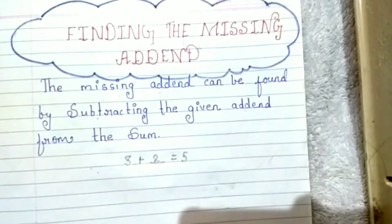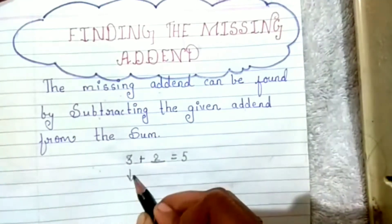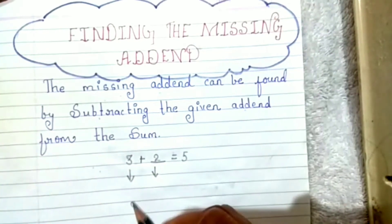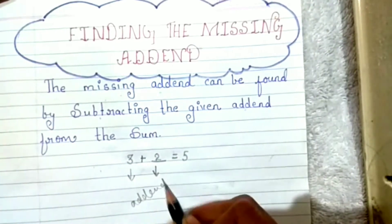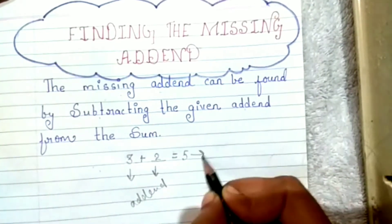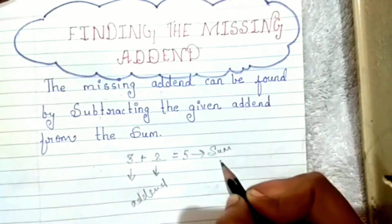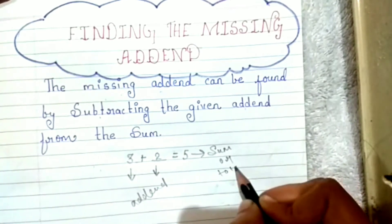सबसे पहले हम यह समझेंगे addend क्या है और sum क्या है। Addend means जिन दो numbers को हम add कर रहे हैं, वो addend कहलाएंगे। और जो result आता है, उसको sum और total बोलते हैं।